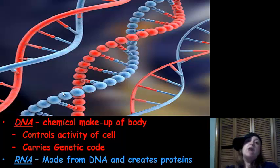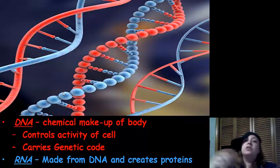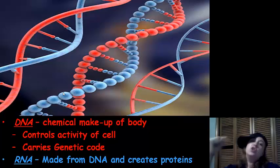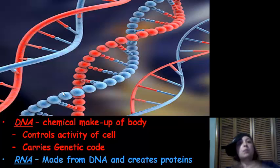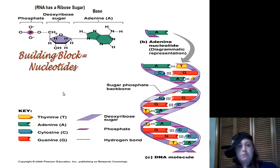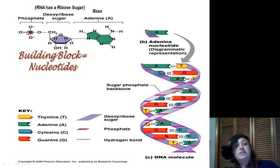Our last type of macromolecule is nucleic acids — DNA. It is our chemical makeup of the body, controls everything in the cell, and carries our genetic code. RNA is made from DNA and creates proteins. The building blocks of DNA and RNA are nucleotides, and nucleotides have three pieces: a phosphorus group, a sugar, and a base.